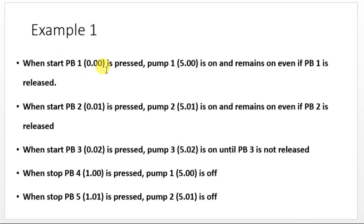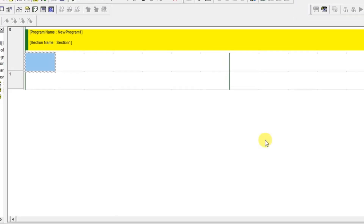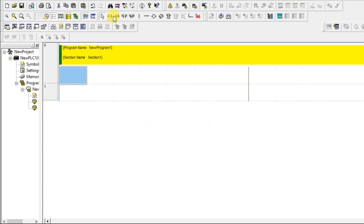Let's try to solve this problem. First, whenever you have logic like this, write down all the inputs and outputs. We have PB1, PB2, PB3, PB4, and PB5 — so 5 inputs, all push buttons. We have pump 1, pump 2, and pump 3 — 3 outputs. Total I/O list: 5 inputs and 3 outputs. Let's move on to CX Programmer and try to solve the problem.